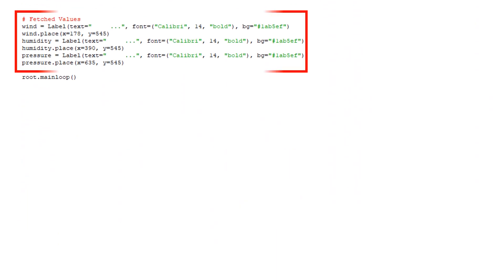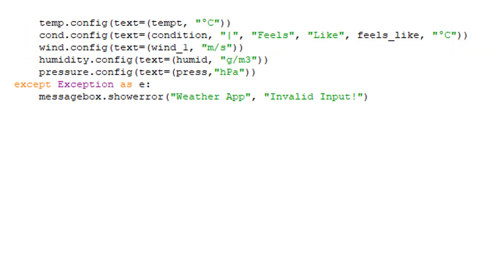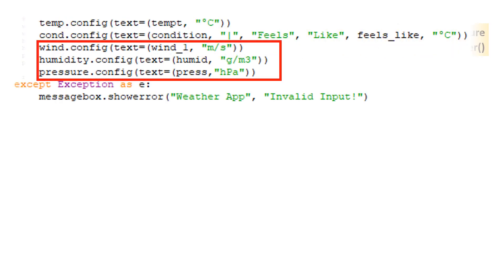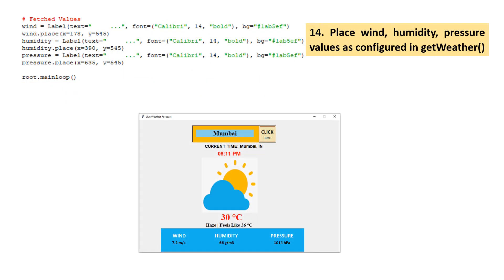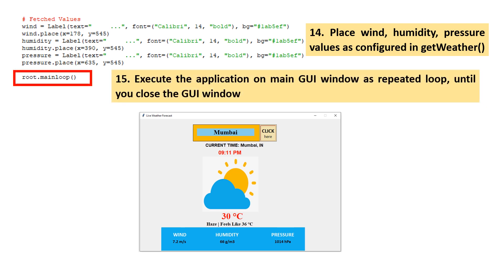Next, the data values for wind, humidity, and pressure — as configured earlier in the get_weather function — are fetched and displayed. Finally, we execute the application on the main GUI window as a repeated loop. This means you can enter a new location and the application will display the weather report for that place. The application works until the GUI window is closed.